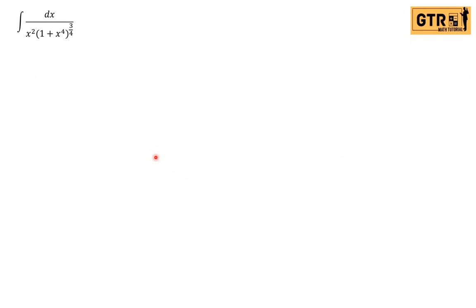First step: we need to express the integrand with the denominator terms moved to the numerator. Since our expression is in the denominator — dx over x squared times (1 plus x to the 4th) raised to 3/4 — we apply the negative exponent rule. So we have the integral of x to the negative 2 times (1 plus x to the 4th) raised to negative 3/4.